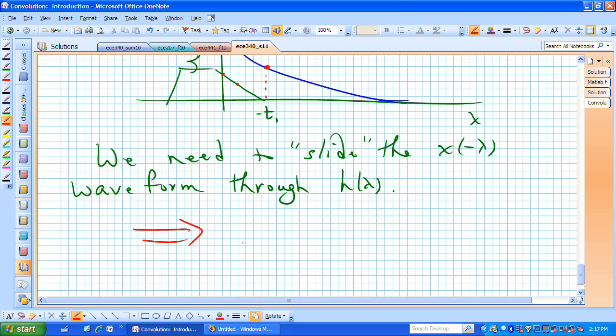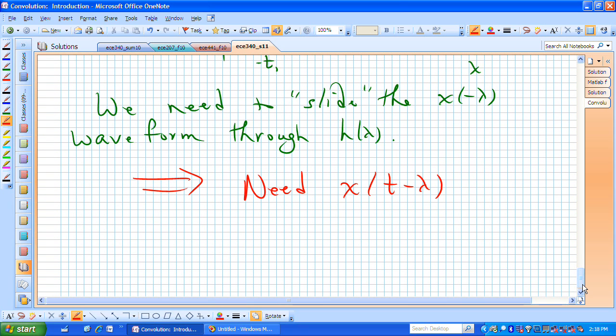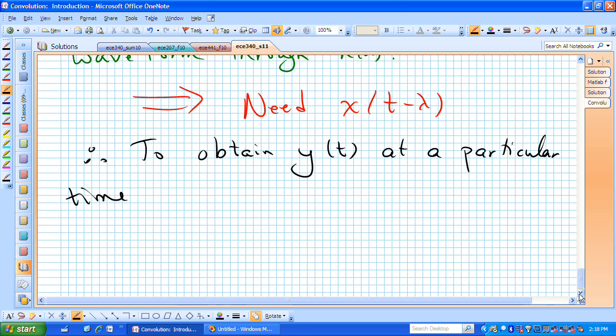What that's saying is we actually need what I've just labeled, and that is t minus lambda where t is now adjustable, and we use that t to slide our input signal through the impulse when we need new values or subsequent values of our output y of t, or to obtain the output y of t at a particular time, which is what's shown in the earlier diagram.